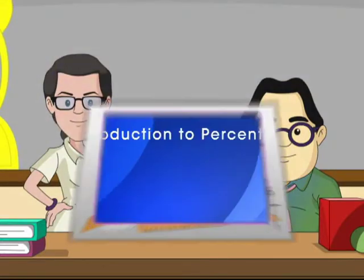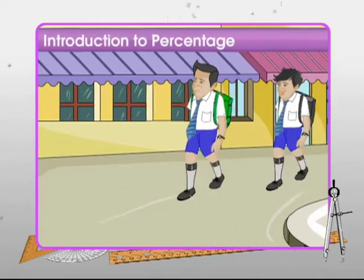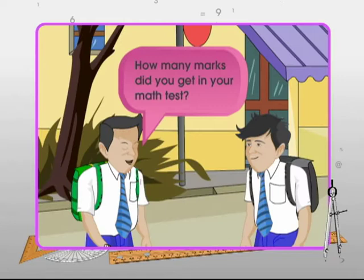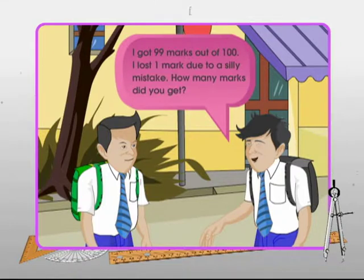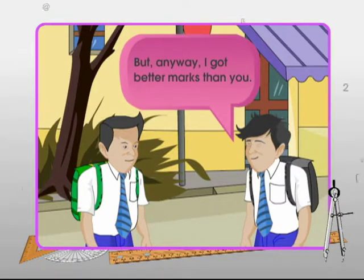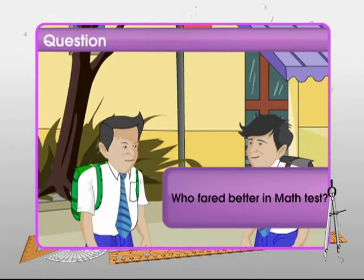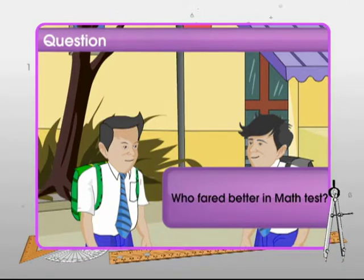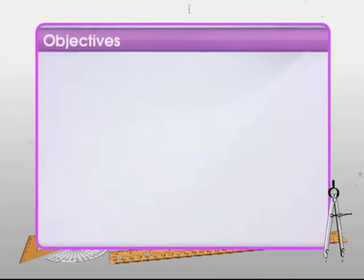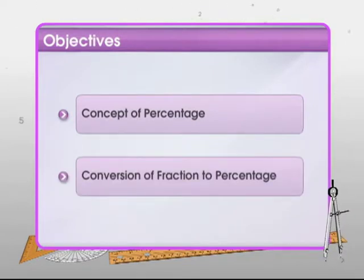Let's hit the virtual world! Mohit and Rohit are on the way back to their house, discussing the marks scored in their math test. Mohit got 99 marks out of 100, while Rohit got 24 marks out of 25. Can you tell who fared better? Let's find out the answer to this question in this module on introduction to percentage.